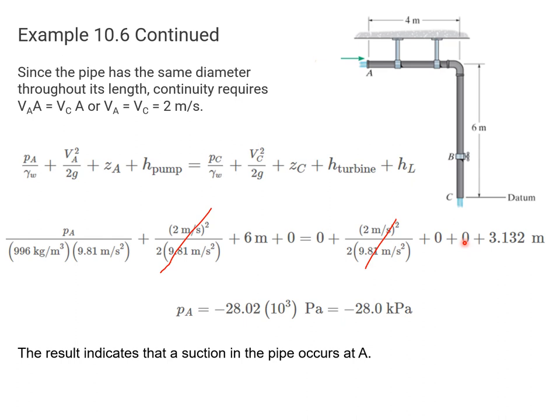Z of C is zero since we're at the reference level. There's no turbine, so that's zero. The head loss is 3.132 meters, which we calculated. So P of A we can calculate, it's minus 28 kilopascals.